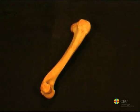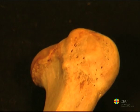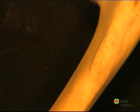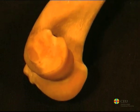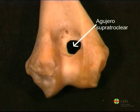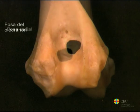The humerus of carnivores is long and thin compared to those of other species. It presents a small proximal extremity and a long, more stylized body. Perhaps the most characteristic anatomical detail of the humerus of dogs is the existence of a supratrochlear foramen in the distal part of the bone, connecting the fossa of the olecranon with the radial fossa.